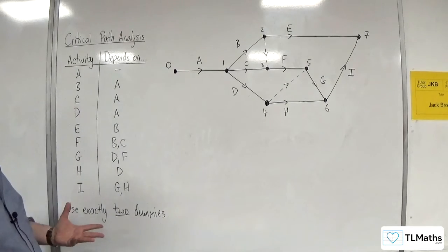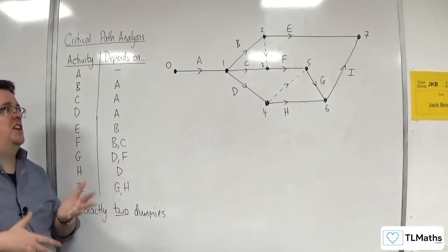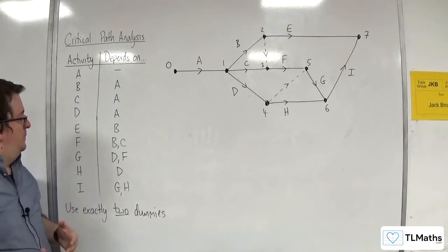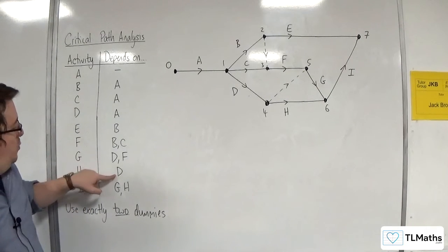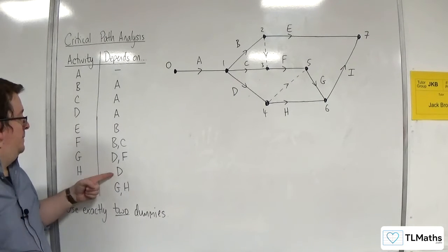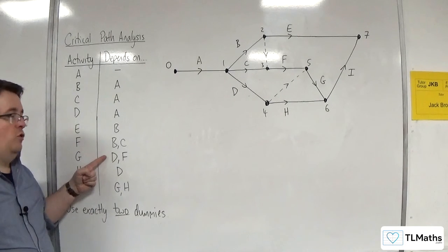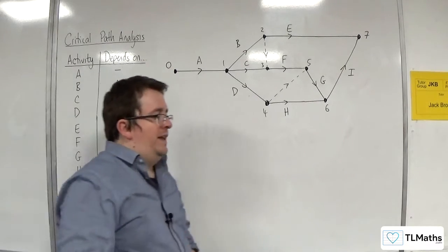But in drawing these, looking ahead and seeing where the connection is going to be, I find that quite difficult. So, if you look ahead and go, right, I've got this single one here. It probably makes sense to draw that first before you draw one that depends on two of the activities.